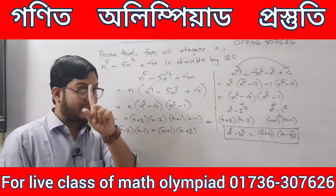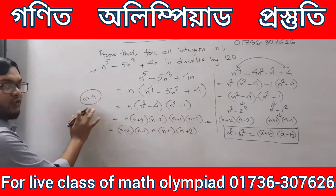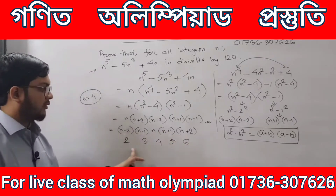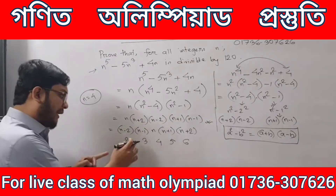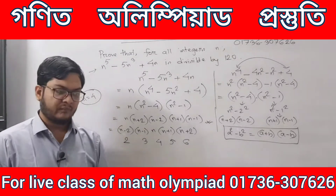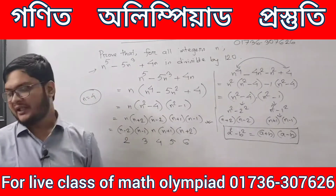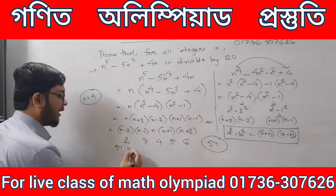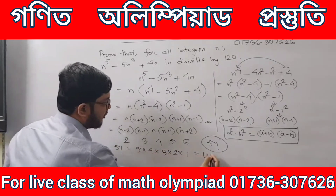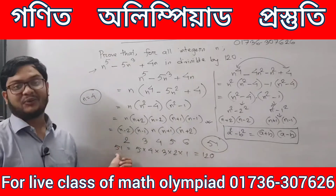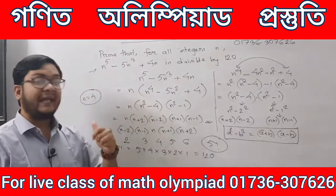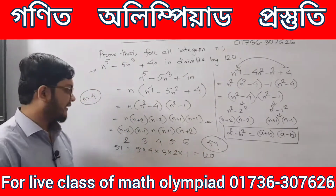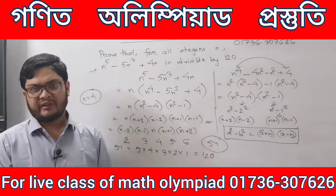So we have 5 consecutive integers — their product gives us 5 factorial. The formula: 5 factorial means 5 into 4 into 3 into 2 into 1. For any value of n, the product of 5 consecutive integers equals 5 factorial, which equals 120. So the expression is always divisible by 120.